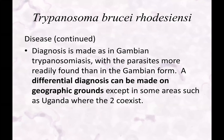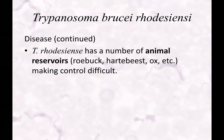To diagnose Gambian trypanosomiasis — parasites are more readily found in the Gambian form. Differential diagnosis can be made on geographical grounds: if you're in Africa searching for trypanosomas, the east coast versus west coast distinction helps, though not always. In Uganda, both exist. Rhodesiense has a number of animal reservoirs — including roebuck, hartebeest, and ox — making control quite difficult.